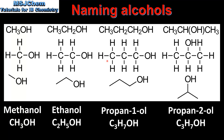When we get to alcohols with three or more carbon atoms in the longest chain there is more than one position for the hydroxyl group. A number is used to signify the carbon atom to which the hydroxyl group is bonded. So this example is propan-1-ol. In our next example the hydroxyl group is bonded to carbon number 2, therefore it is named propan-2-ol.